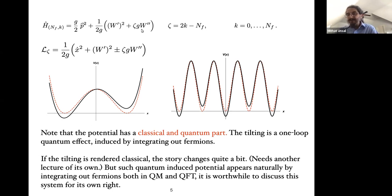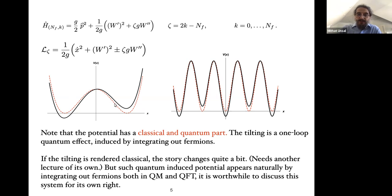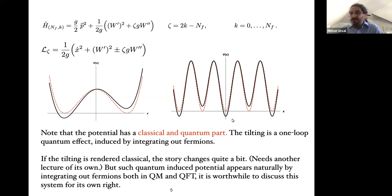We are at the advantage of quantum mechanics and can integrate out fermions exactly. For example, if the red curve is your classical double-well potential, the black curve is the quantum-modified potential for one of these Hamiltonians. Similarly for the periodic case: red is classical and black is the quantum-modified potential. This quantum modification comes from integrating out fermions exactly.